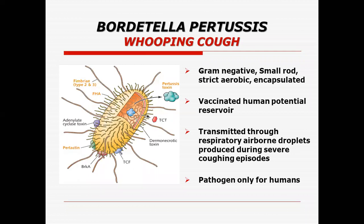If you look at the diagrammatic representation, the organism does have fimbriae, it does have pili, it has molecules for the pertussis toxins, and it has molecules for what you call filamentous hemagglutinin. It also has tracheal cytotoxins, what we call TCT, and some dermonecrotic toxins. So the organism is full of toxins: pertussis toxins, adenylate cyclase toxins, and tracheal cytotoxins.